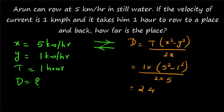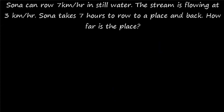Question 3: Sauna can row 7 kilometers per hour in still water. The stream is flowing at 3 kilometers per hour. Sauna takes 7 hours to row to a place and back. How far is the place? Note: this formula applies when only the total time for rowing to a place and returning back is given — not the separate upstream or downstream times.